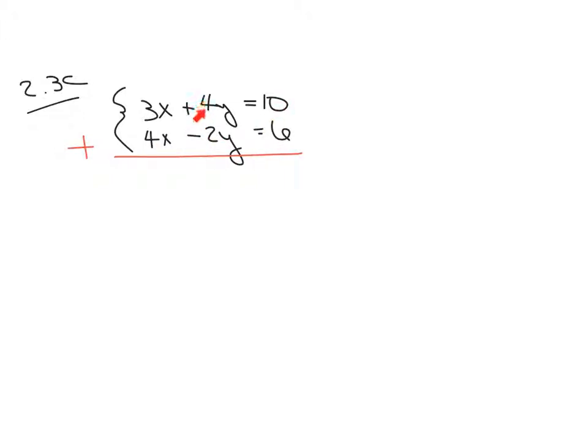then, for example, if I want to make the y's disappear, that means I'm going to have to add 4 plus a negative 4 because 4 plus negative 4 is 0. 0 y's is 0. So that means my y's will go away. Well, how do I make this into a negative 4 so that when I add these, they go away? Very easy. I multiply the entire equation by 2.